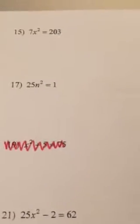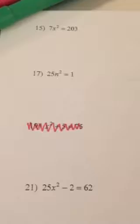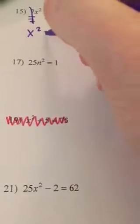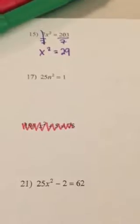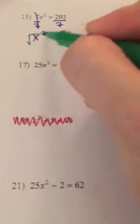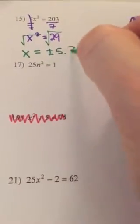Now we have 7x squared — that 7 and that x squared are being multiplied by each other. To undo multiplication, I need to divide by 7 on both sides so that it cancels out. x squared equals 29. Now x squared is by itself, so I can square root: x equals plus or minus 5.3.